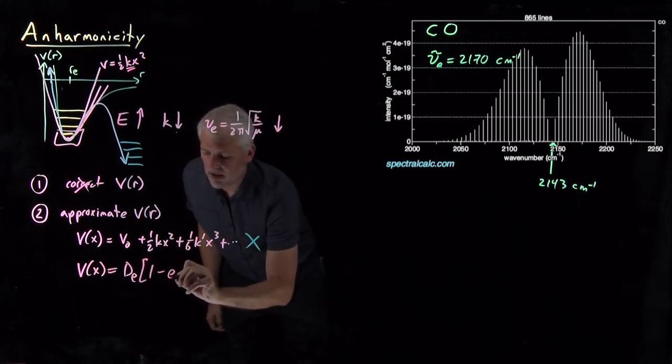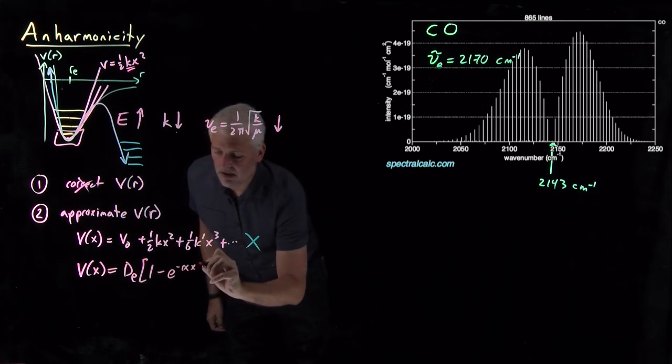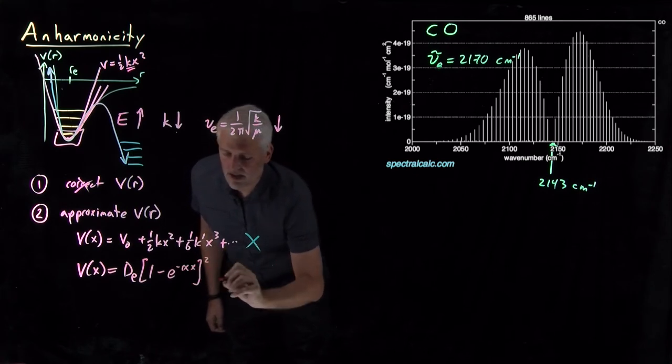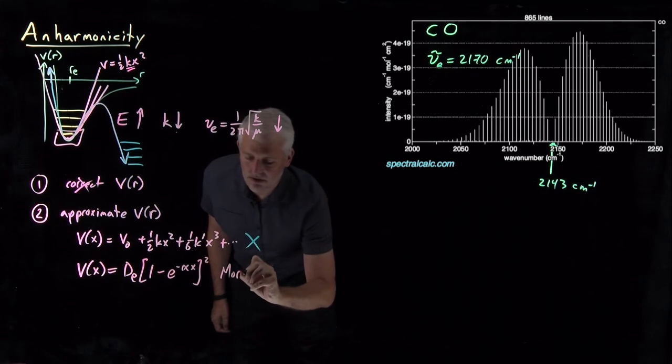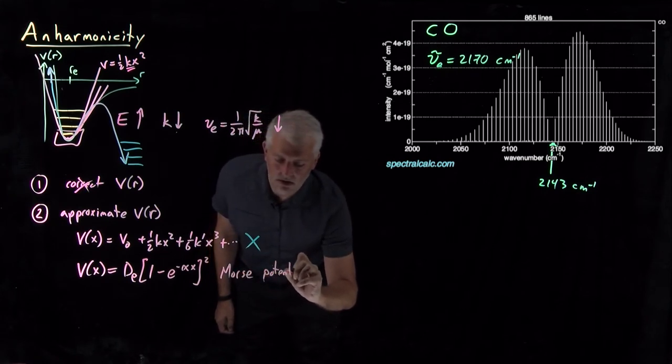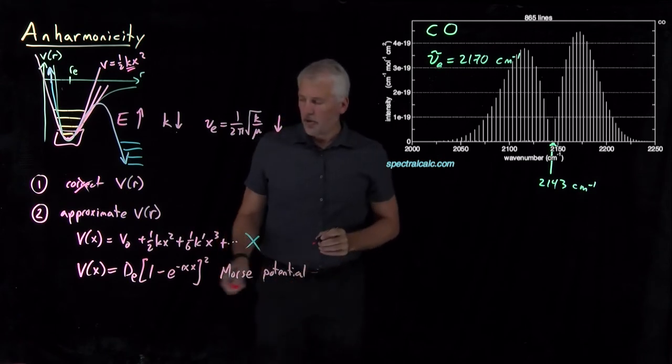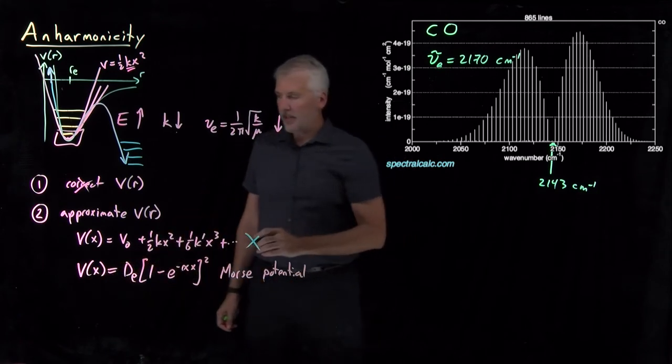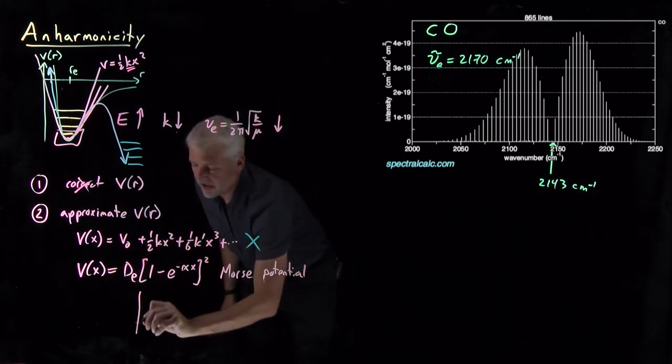Very common and not terribly complicated equation that can be used is this one. That's called the Morse potential. So this potential energy function, in fact, does have the correct shape.